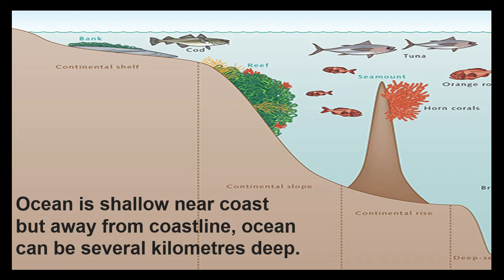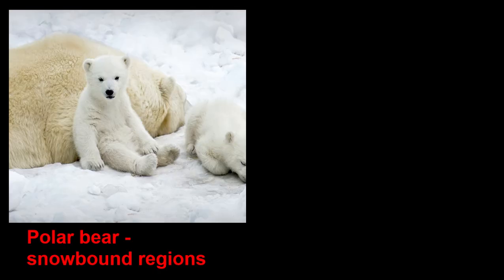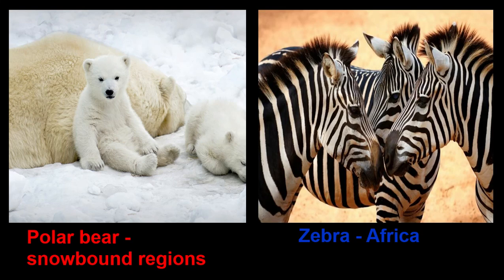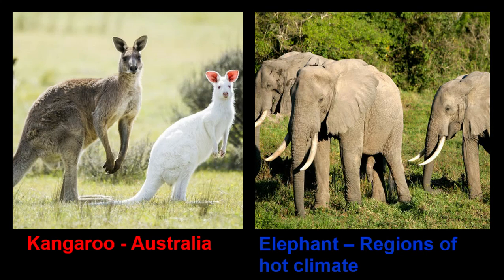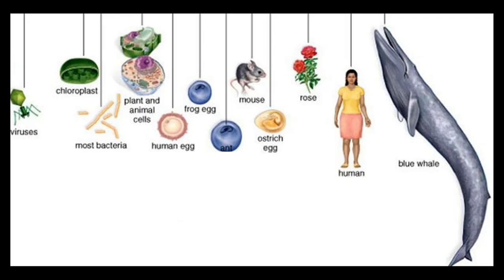We see a great variety in the living things that inhabit these different regions. The polar bear is seen only in the snowbound polar regions. Zebras are found in Africa and kangaroos are found only in Australia. Elephants and lions are found in regions of hot climate. Plants in all these different regions also show a great variety.